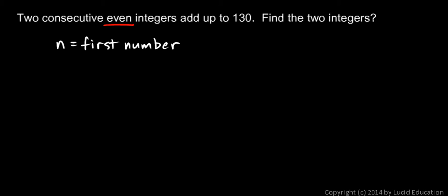Even numbers are all spaced in twos, so n plus 2 will be the second number. And I want to find the two numbers. Well here's the key fact. They add up to 130.